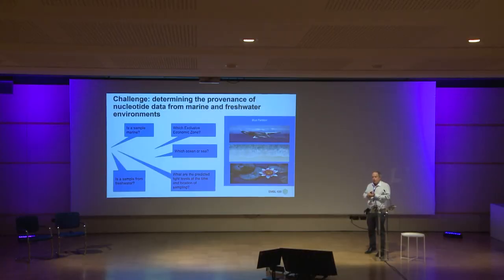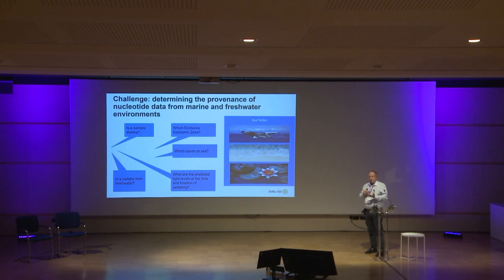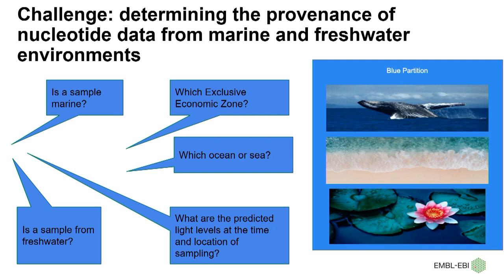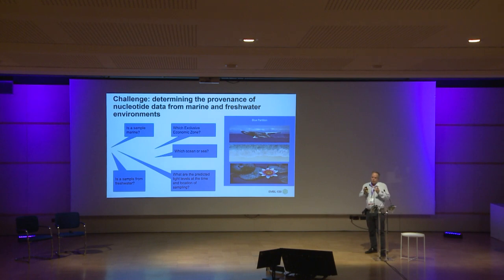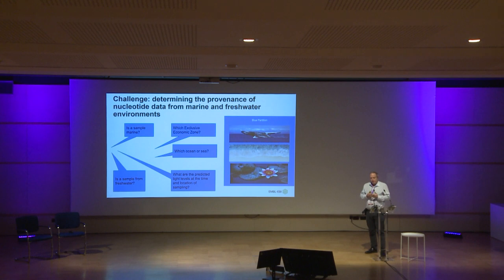We had a challenge where we were told we need to explore the data and come up with good ways to determine the province of samples — to find out if they're marine and freshwater. We needed to come up with a blue partition, which means was the sample in the sea, was it on the shoreline, or freshwater? And there's a bunch of questions: if it was marine, if it's freshwater, but also quite importantly these days, was a sample in an exclusive economic zone? If so, which one? Which ocean or sea is it in? And then there's more oceanographic things, including depth, but also what about the predicted light level at that time, at that location? There's a lot of things we can do if we get this location correct.